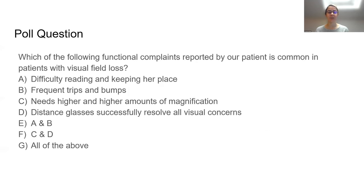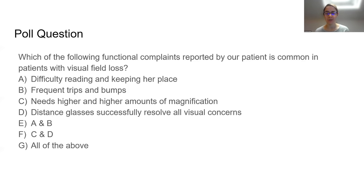A poll question was asked: which functional complaints are most common in patients with visual field loss? Options included difficulty reading and keeping place, frequent trips or bumps, a need for higher magnification, or distance glasses resolving the problem. Most respondents selected difficulty keeping her place and frequent trips and bumps, or a combination of those, confirming we are aligned on common functional complaints in visual field loss patients.